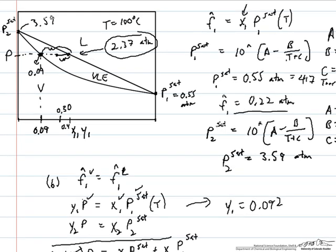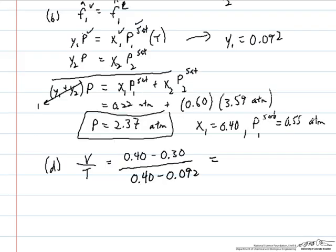We divide that by the total line length, which extends from 0.092 to 0.40. We find the fraction of the total moles that's in the vapor phase is equal to 0.33. So in other words, if we had a mole of this 30% acetic acid mixture in the total system, then one-third of it at this temperature and pressure would be in the vapor phase, or one-third of a mole would be in the vapor phase, and two-thirds of a mole would be in the liquid phase.